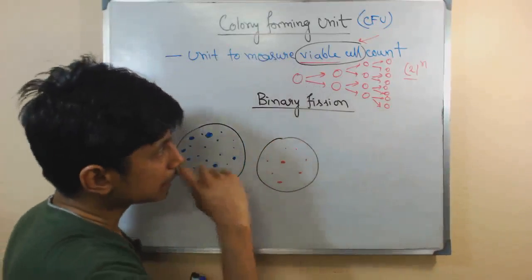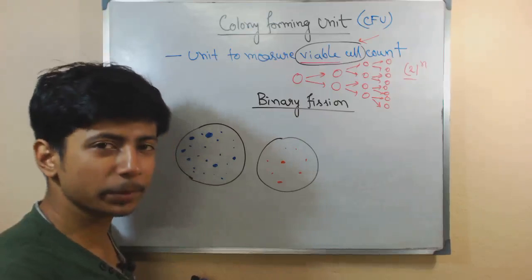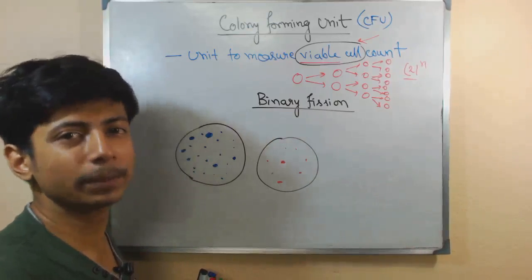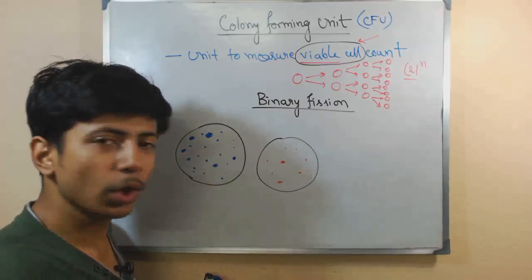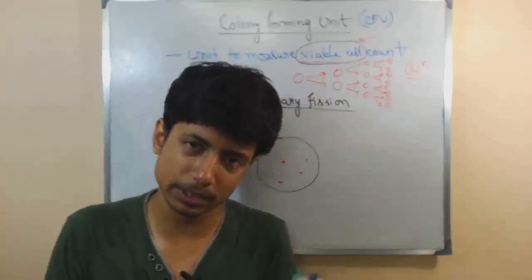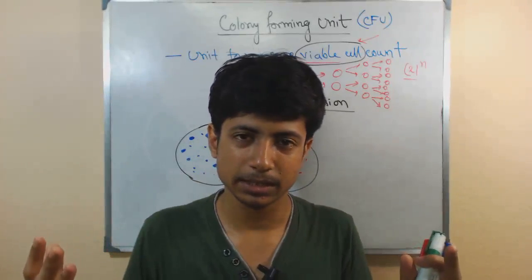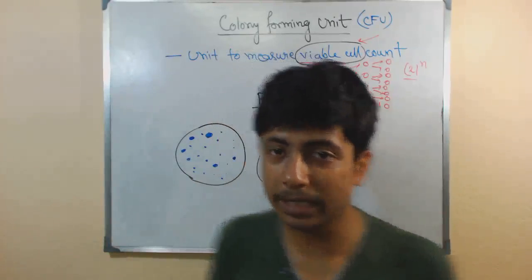So in that case, if you look at it through a microscope, we cannot differentiate between living bacteria and dead bacteria because all of them look the same. If we count the number of bacteria present using a microscope or slide, we actually count everything—dead as well as living.